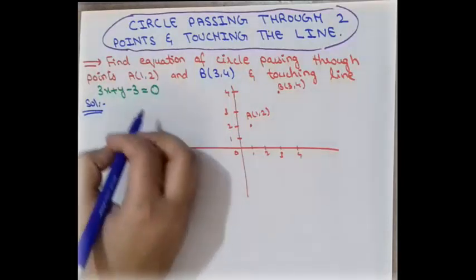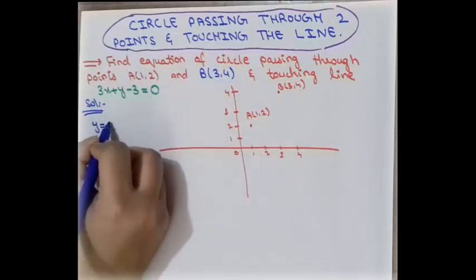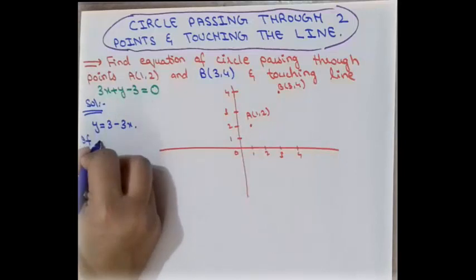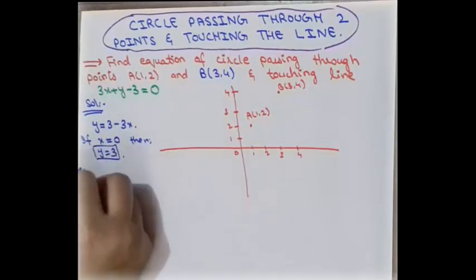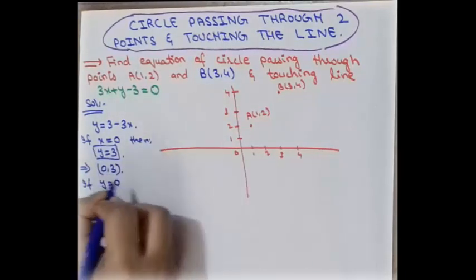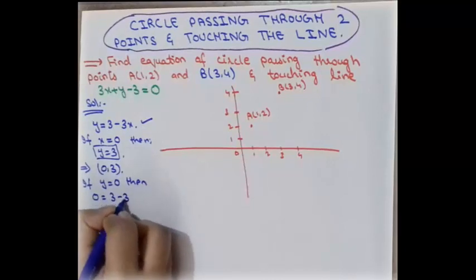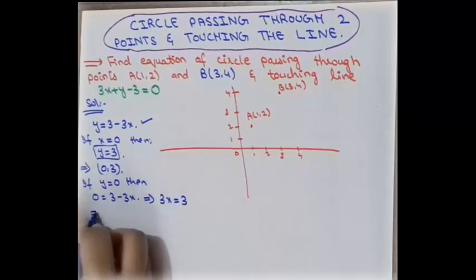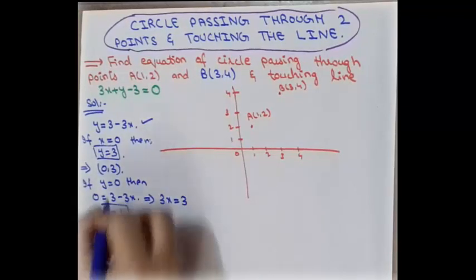We are given the equation of a line. To plot it on a graph, we first find the intercepts. The given equation is y = 3 − 3x. If we take x = 0, then y = 3, giving the first point (0, 3). If we put y = 0, then 0 = 3 − 3x, so 3x = 3 and x = 1.